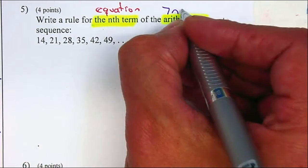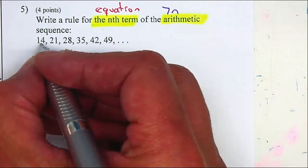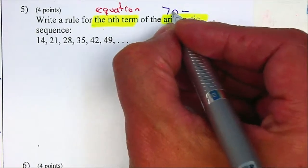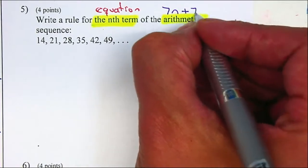If I plug in a 1, it should give me 14. So what else do I need? I need a 7 times 1 is 7. To get to 14, I need another 7.